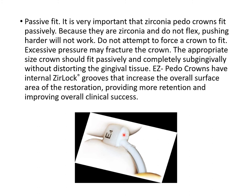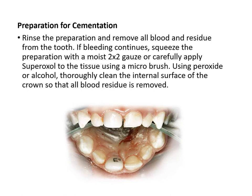Fill the zirconia crown with resin epoxy luting agent or GIC, again approximately two-thirds full, seat it uniformly, remove excess, and light cure from facial and lingual sides. Before cementation, rinse the preparation and remove all blood and debris. If bleeding continues, apply pressure with moist gauze or carefully apply superoxal to tissue with a microbrush. Thoroughly clean the internal surfaces of the crown with peroxide or alcohol to remove all blood and residue, as retention depends entirely on the luting agent's close approximation to both the tooth and crown.